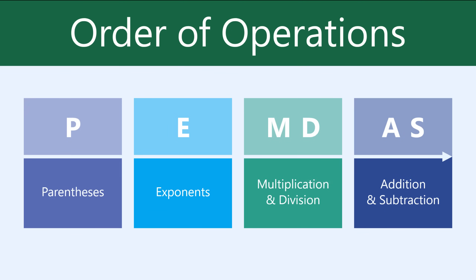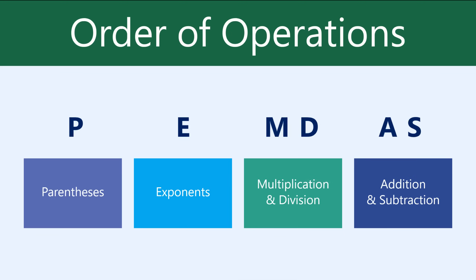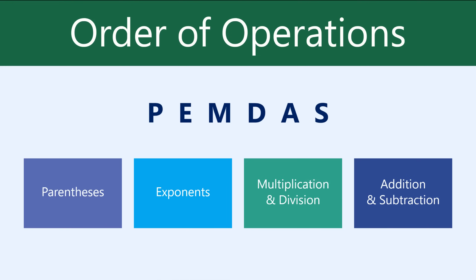Excel knows to use the order of operations whenever it calculates a complex formula. It's important that you remember it, so you can create formulas that'll give you the correct answer. To remember the order, you can just use the acronym PEMDAS.